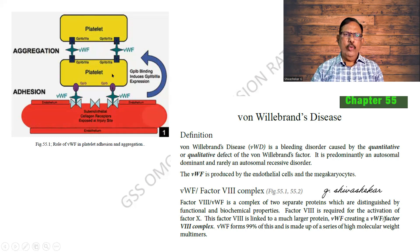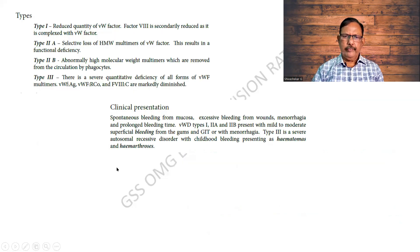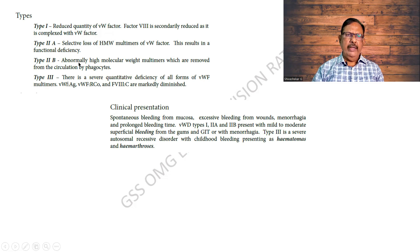The factors given here are important — this is a very important diagram that you can draw. These are the types of Von Willebrand's disease: reduced quantity, selective loss of high molecular weight multimers, and Type 2B where abnormally high molecular weight multimers are removed by phagocytosis. Type 3 is a quantitative deficiency; all others can be qualitative.